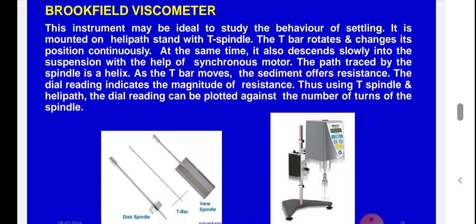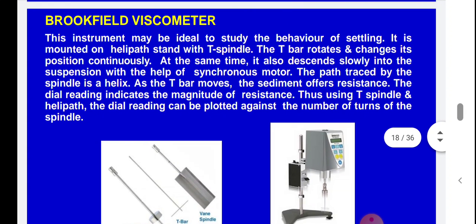For determination of viscosity of suspension, the Brookfield viscometer is used industrially to study the behavior of settling. It is mounted on a helipath stand with a T-spindle; the T-bar rotates and continuously changes its position while also slowly descending into the suspension via a synchronized motor. The path traced by the spindle is helical, and as the T-bar moves, the sediment offers resistance — the dial reading indicates the magnitude of that resistance.